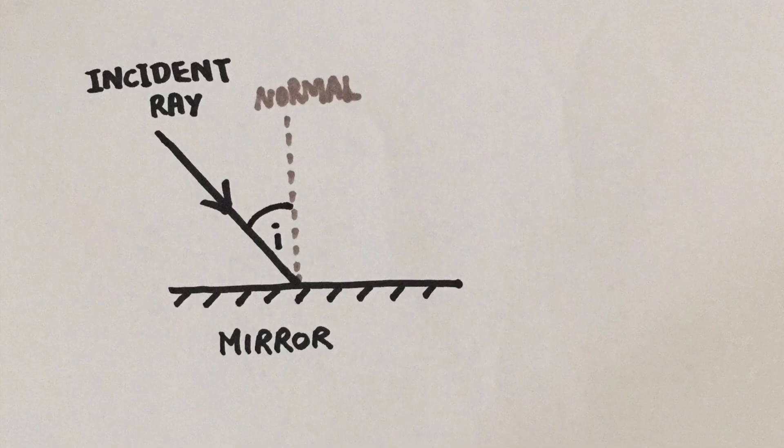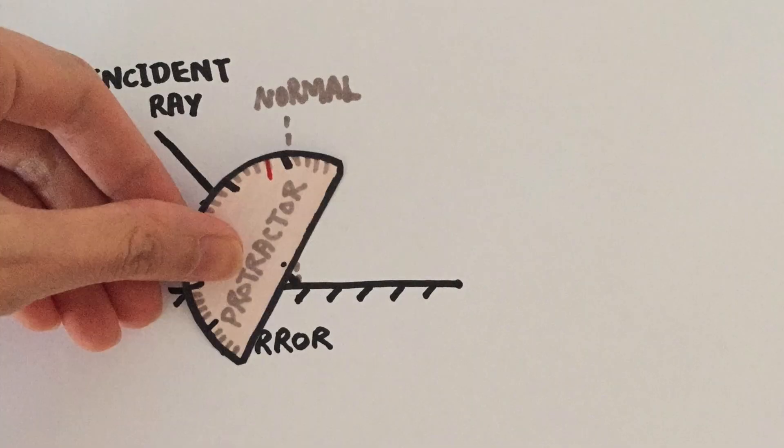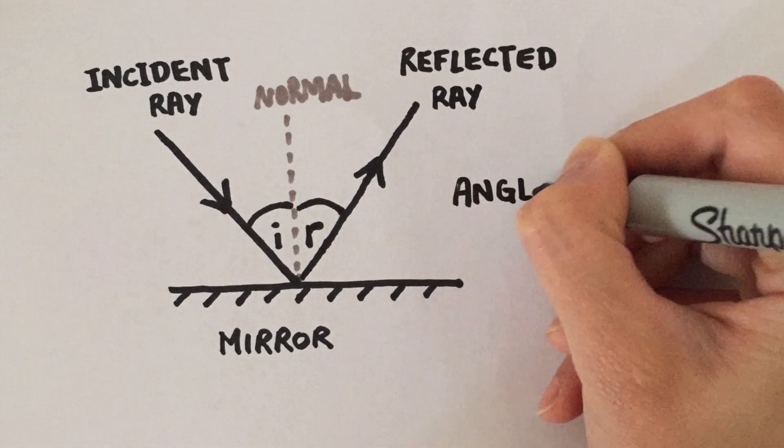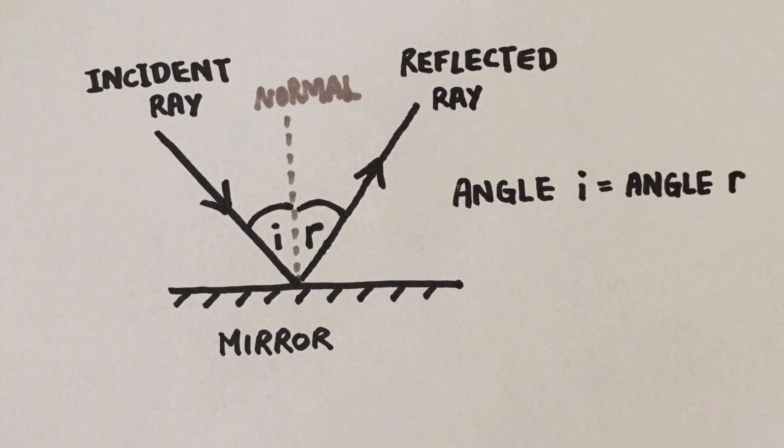The angle between the incident ray and the normal is the angle of incidence. According to the law of reflection, we can measure out the same angle from the normal, but on the opposite side, to draw the reflected ray.